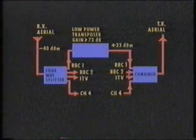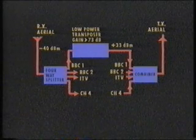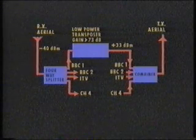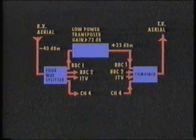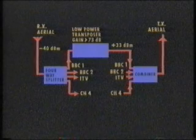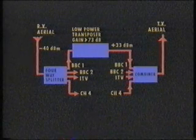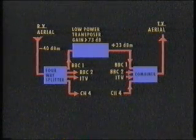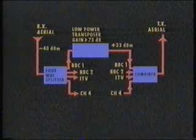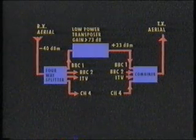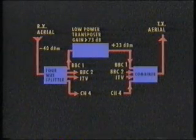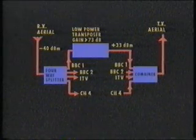The typical peak sync input signal level is around minus 40 dBm, and the required output is 2 watts peak sync, which is plus 33 dBm. As a result, the low power transposer must have a minimum gain of around 73 decibels.